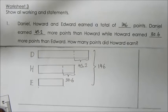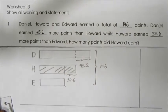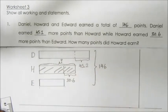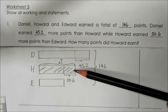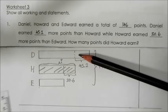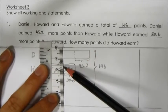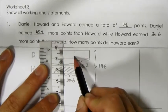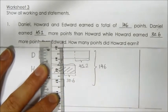The question asks us to find the number of points Howard earned, which is what I shade here — marked with a question mark. That total is 146 points. Now if you look at Howard and Daniel, I can use my ruler here and you can see there is this portion that represents 30.6.